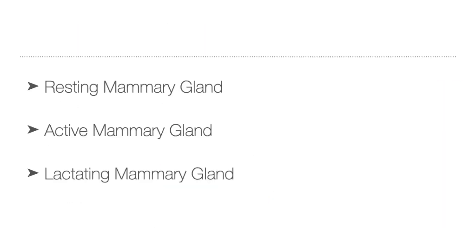There are three physiologic or functional states in the mammary gland of females that result in striking histologic and physiologic changes. These are the resting mammary gland, the active mammary gland, and the lactating mammary gland.